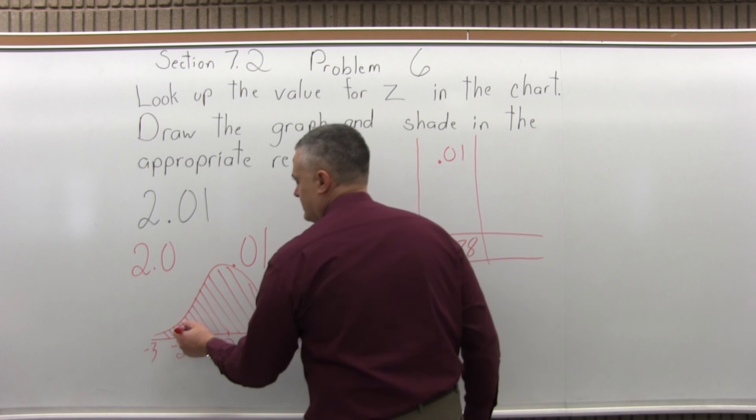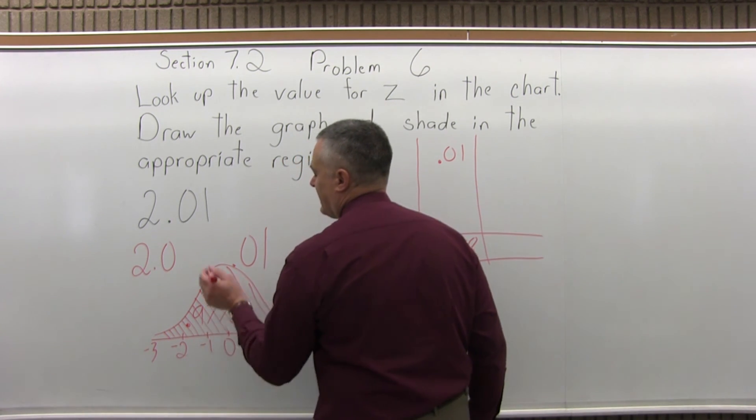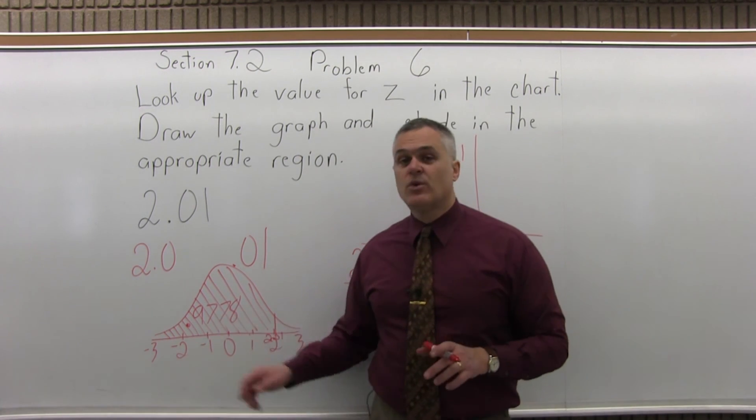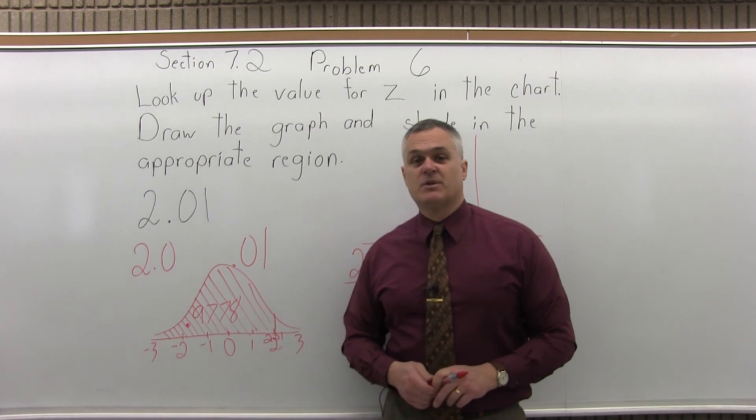And I'll label it as .9778. So there's approximately a 97.78% probability of being in that shaded region of the bell curve.